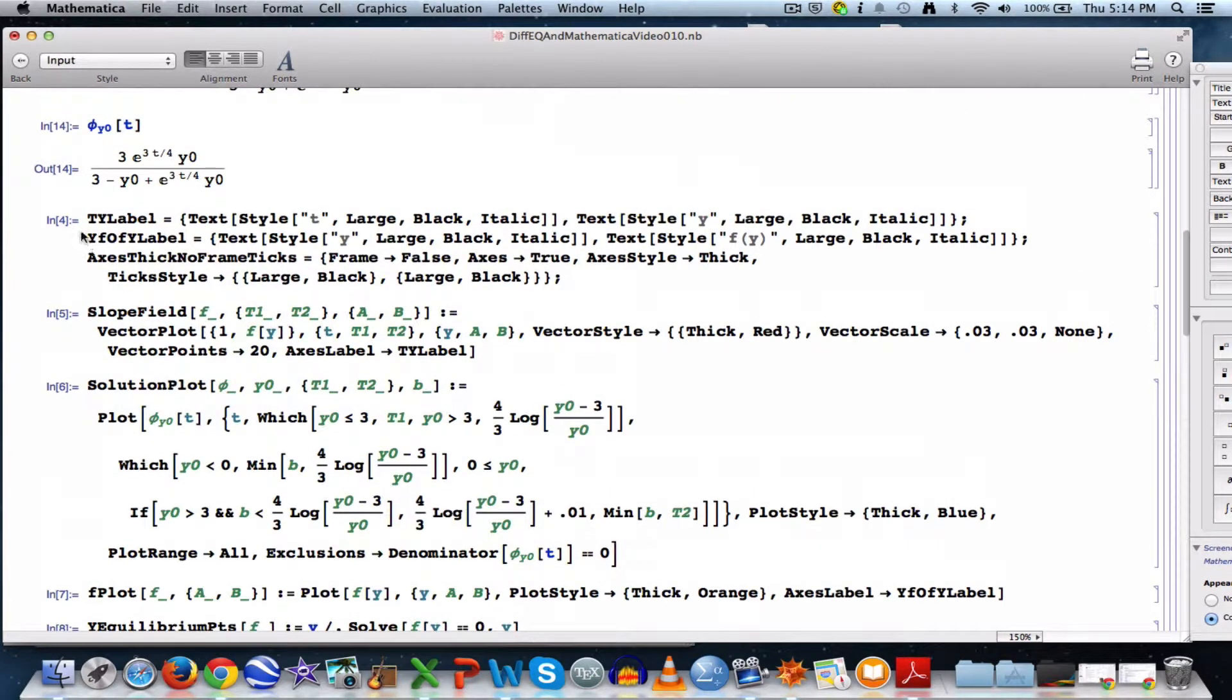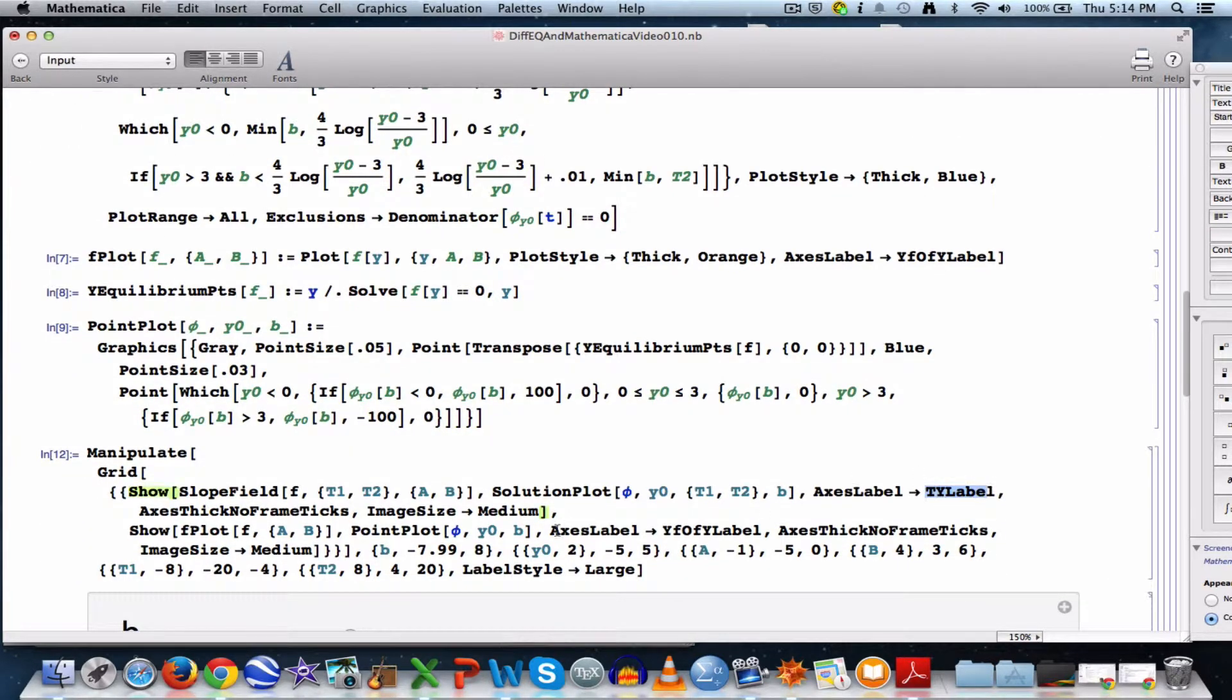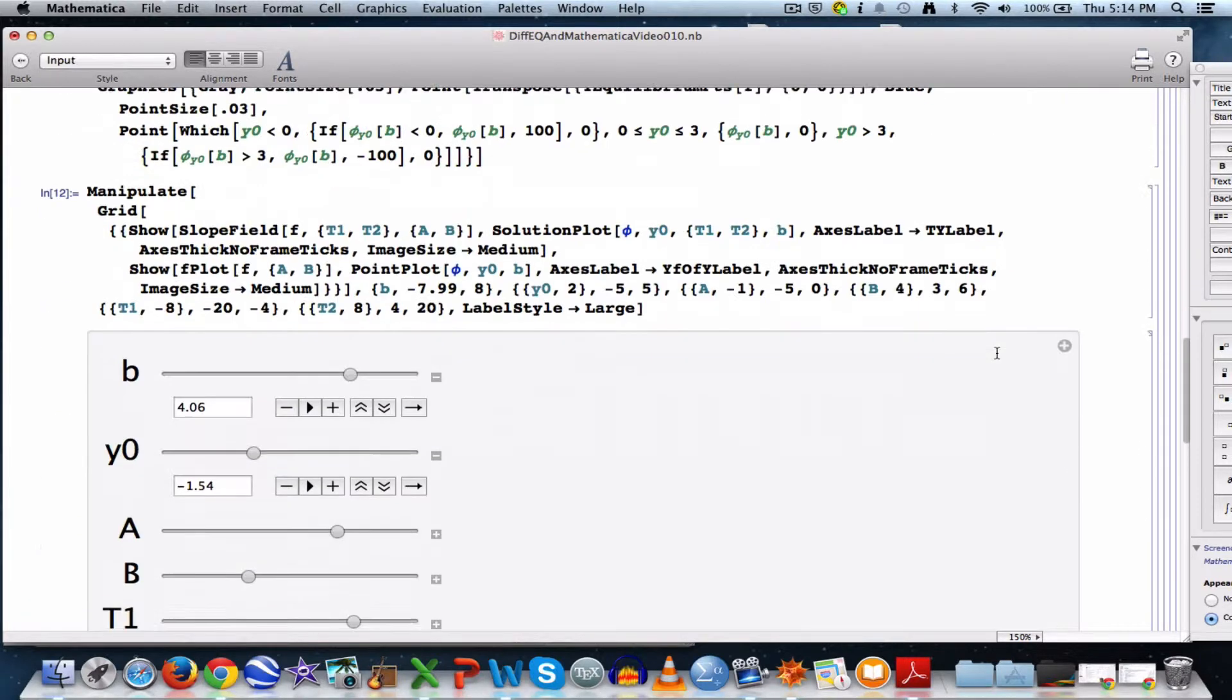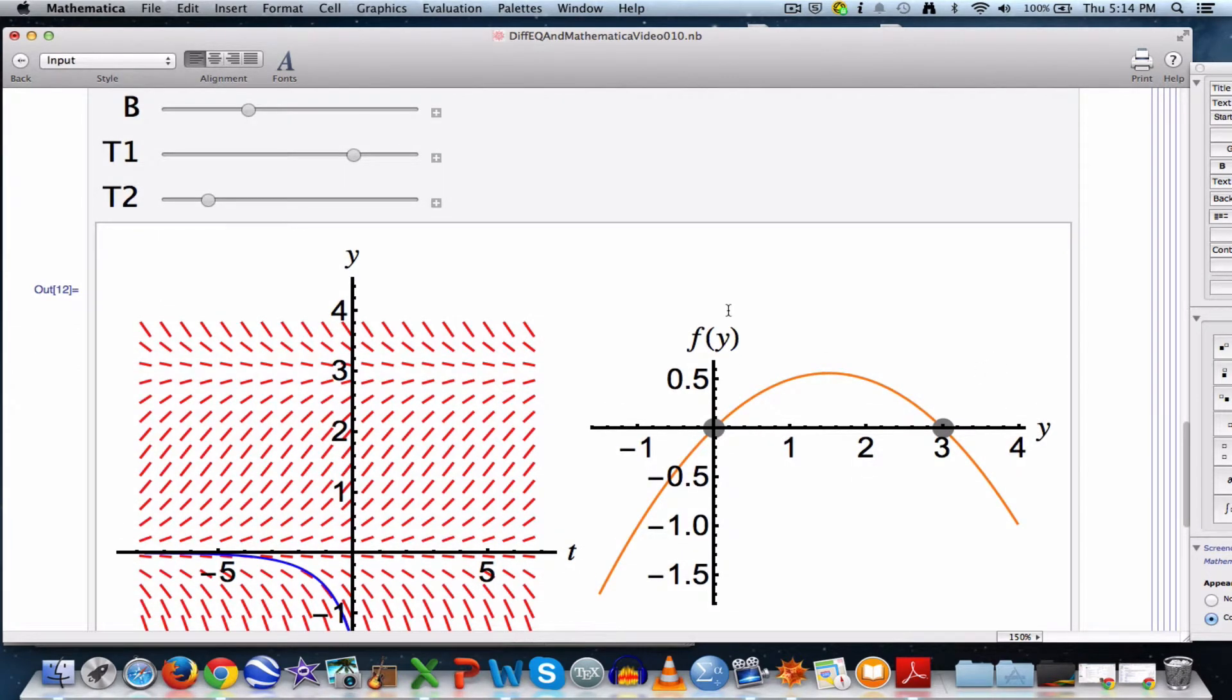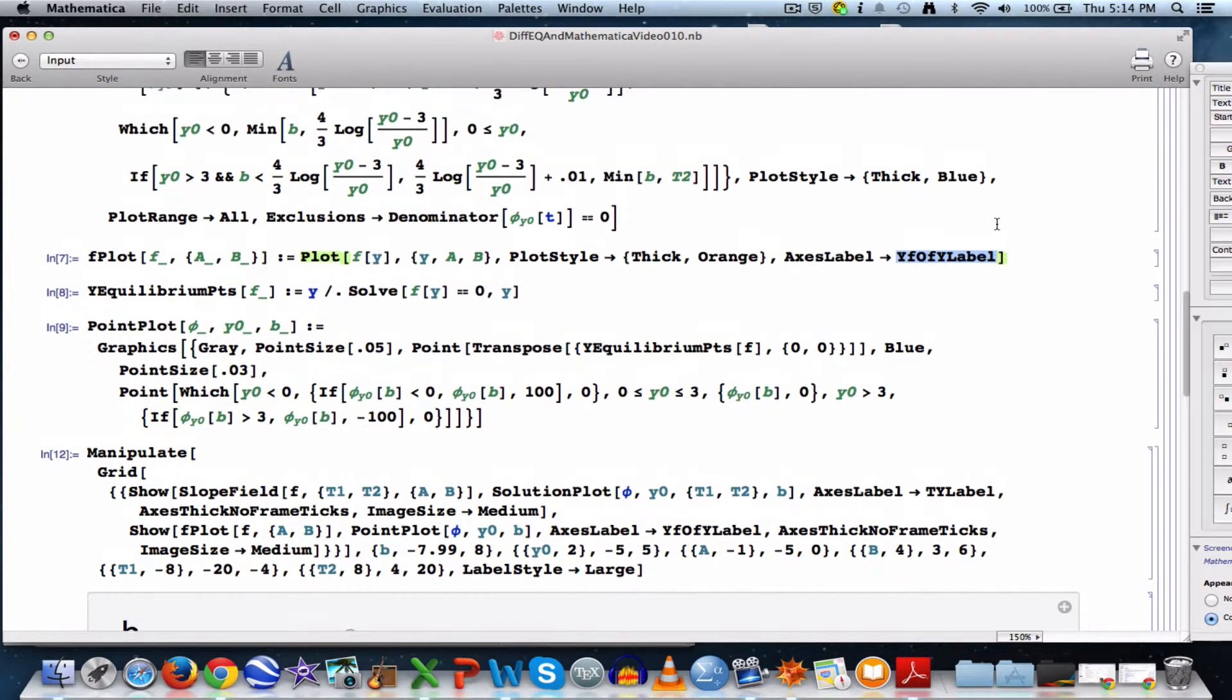That's this thing right here. I use textile, large, black, italic in a lot of my labeling of my axes, and so I decided to take the situation where I labeled the horizontal axis with t and the vertical axis with y and put it all, store that information in something I called ty label, and then I'm using ty label down there. In a similar way, I've got also a, let's see, where is it? Up in here, actually, some other code, y of y label. What is that label?